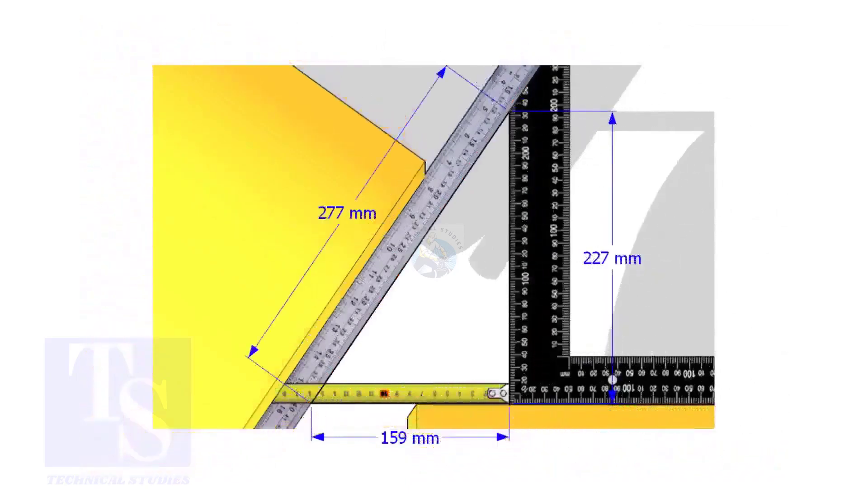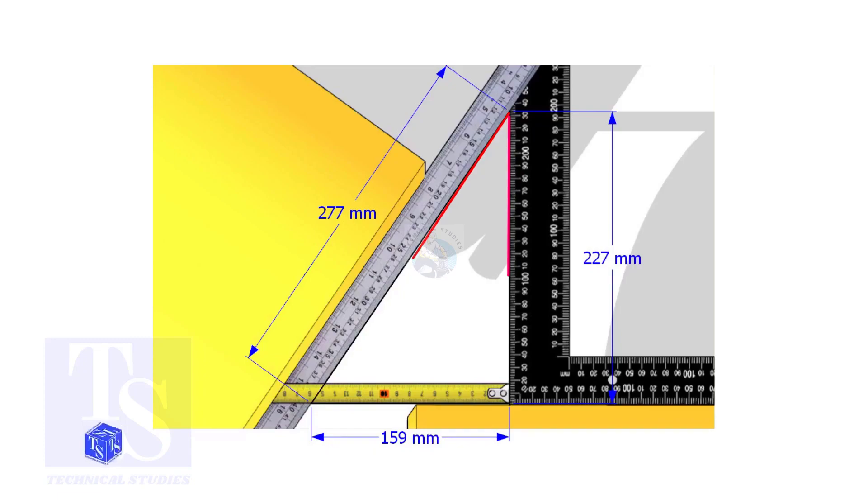Assume that these are the dimensions. Let us calculate the including angle. If you apply the sine rule, the angle will be 159 divided by 277, shift sine.